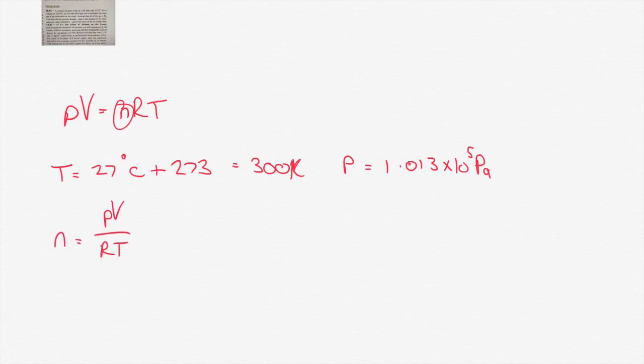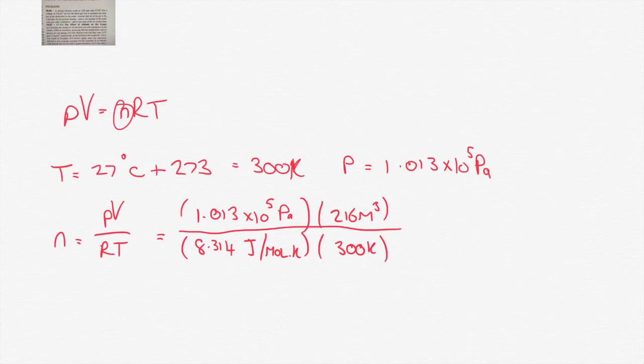So we'll solve for that and we get PV over RT. So when we plug in the numbers there, our P is going to be 1.013 by 10 to the 5 Pascals. Our V is 216 meters cubed, as is given to us in the question. Our R is 8.314 joules per mole per Kelvin. And bonus points for anybody who knew the units of the gas constant off the top of their head. And the temperature, no bonus points here for knowing the units of temperature, are Kelvin. So now it's just a matter of putting these numbers into your calculator. And we get an answer of 8,773 moles.